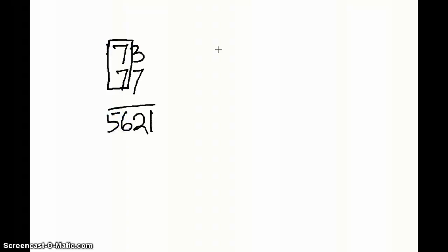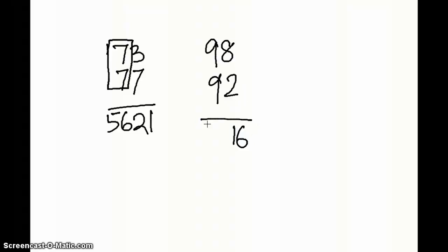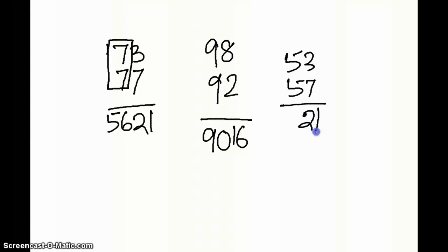Let's take another case: 53 × 57. Again, 7 × 3 = 21. The next number after 5 is 6, so 6 × 5 = 30. The answer is 3021. This is a very simple and effective technique.